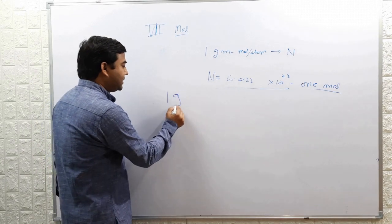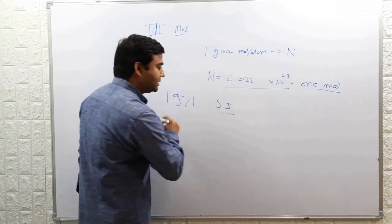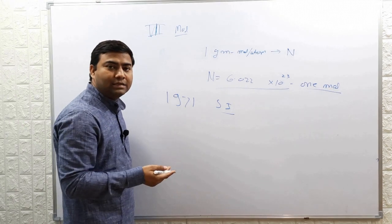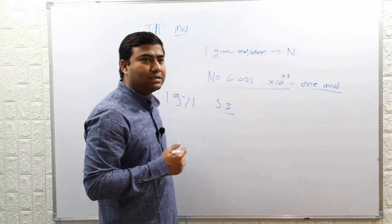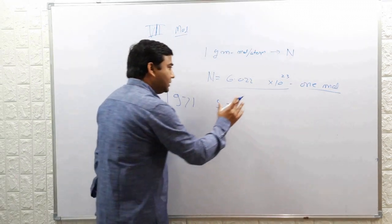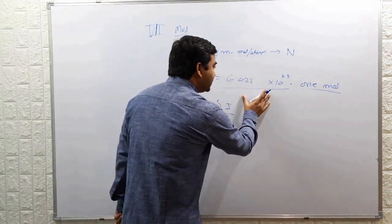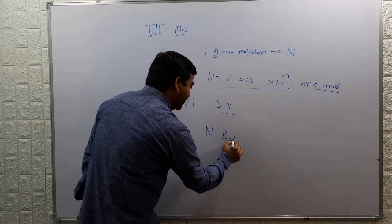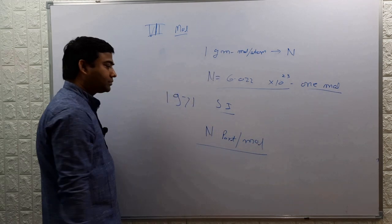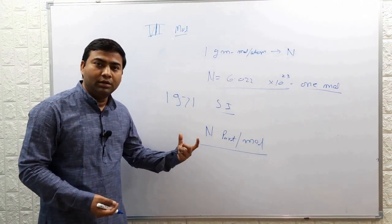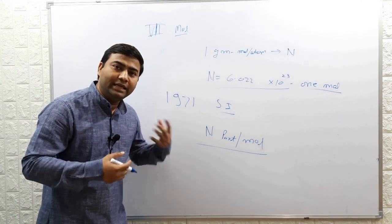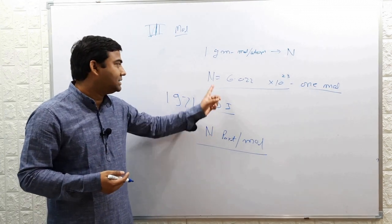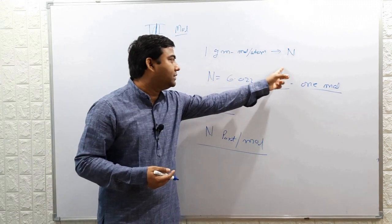When the mole was included in 1971 in the SI system, the Avogadro number was redefined as the Avogadro constant. It was defined as N particles per mole — one mole amount of any atom or particle will contain N number of those type of particles, where N is the Avogadro number or Avogadro constant, given by that number.